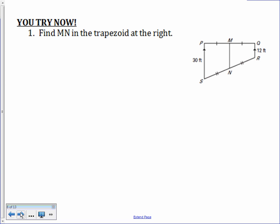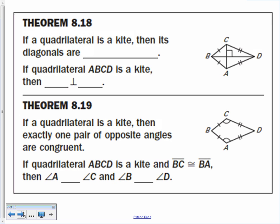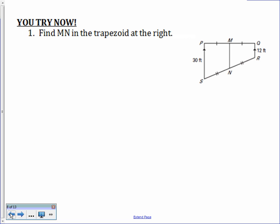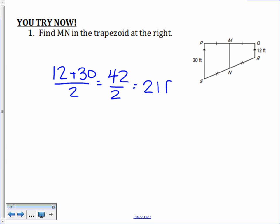For the 'you try' — go ahead and pause the video to find MN in the trapezoid. For this one, we take the average: 12 plus 30 divided by 2 — that's 42 divided by 2, which equals 21. Our answer should be in feet.